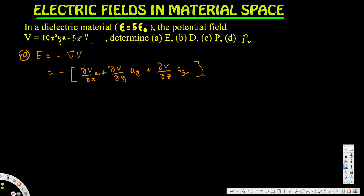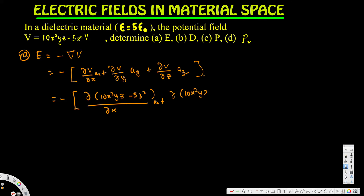Now we have to plug in the function. This is going to be: negative partial derivative of (10x²yz minus 5z²) with respect to x in the ax direction, plus partial derivative of (10x²yz minus 5z²) with respect to y in the ay direction, plus partial derivative of 10x²yz...